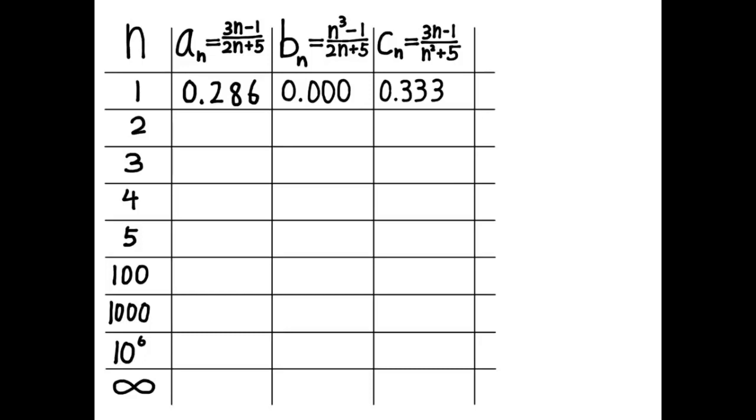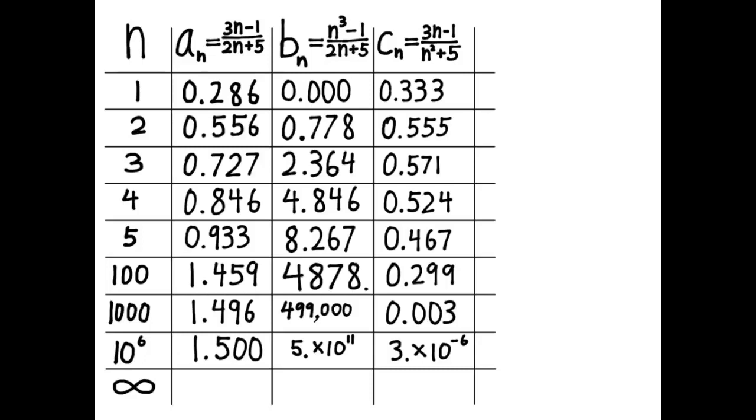All right, now most of this table you can fill out just with the help of your calculator or reasoning. But this final row, infinity, where you seem to be asked for A sub infinity, how did you fill that out? I think you probably looked at the trend in each of the columns. In the first column, the numbers seem to be converging upon the number three halves.